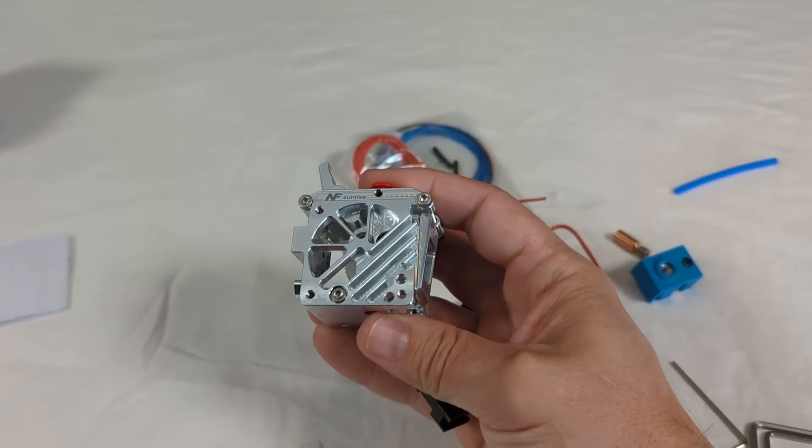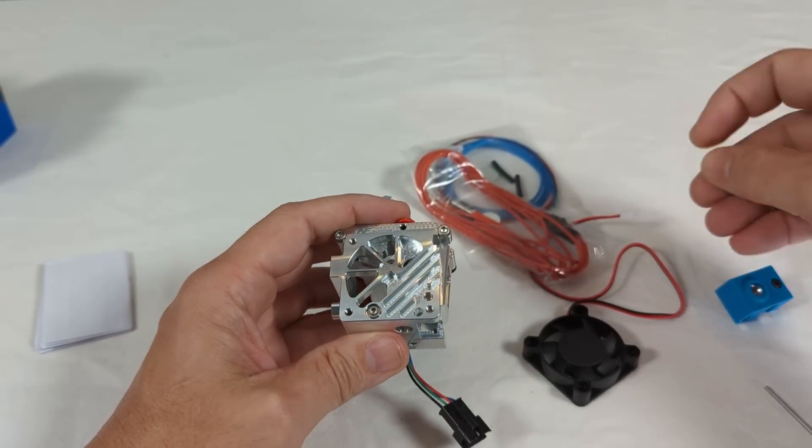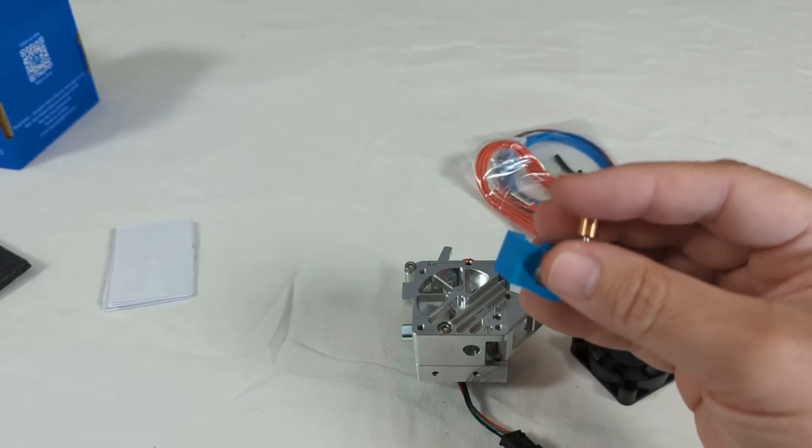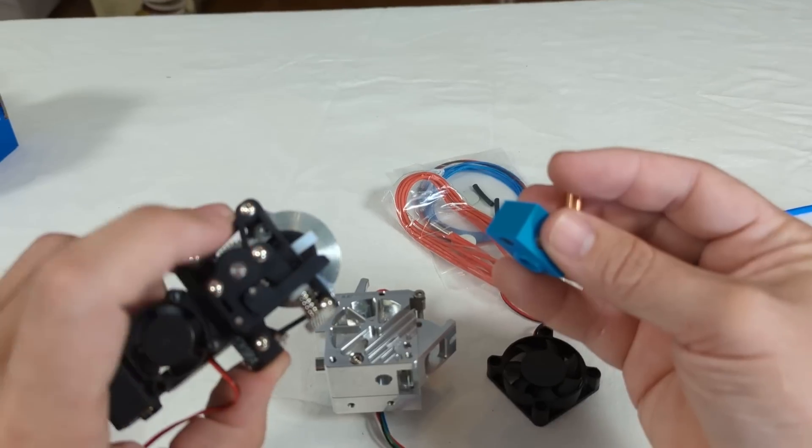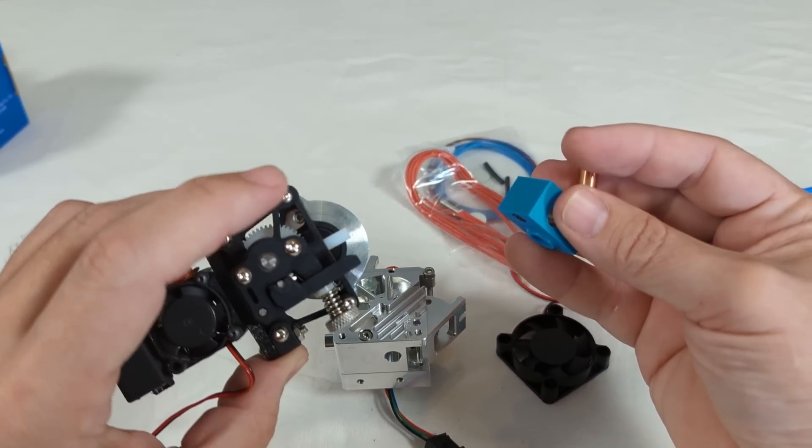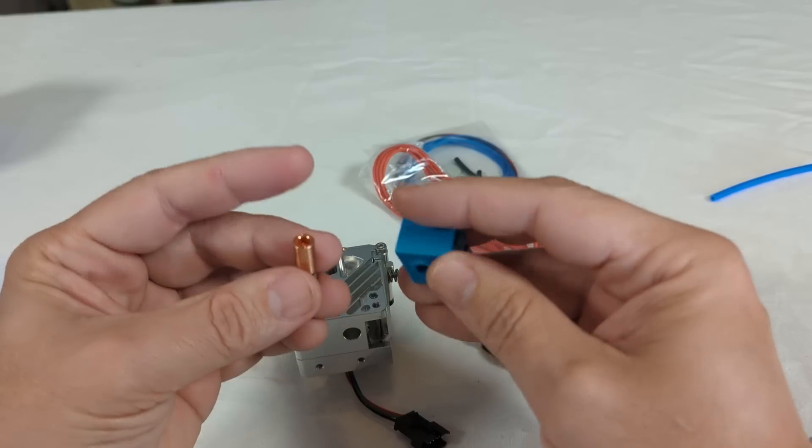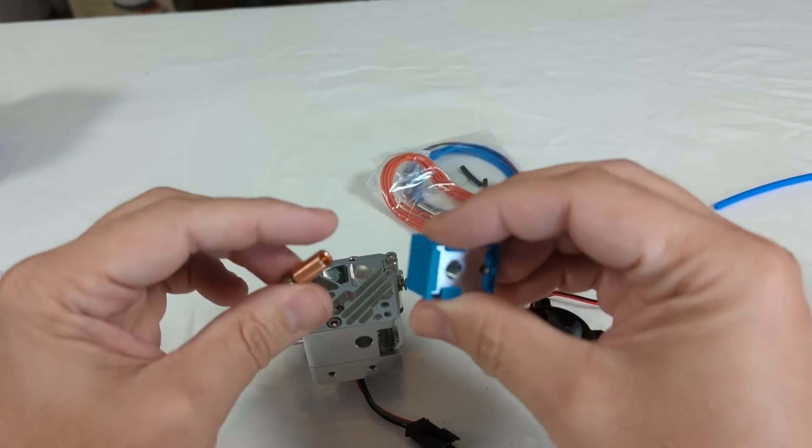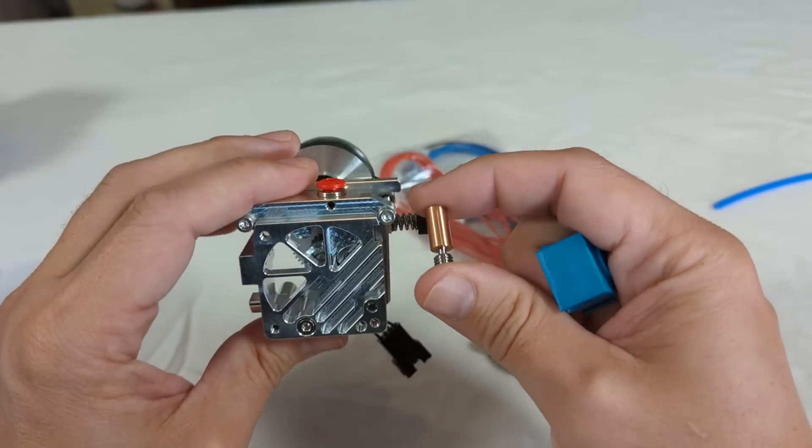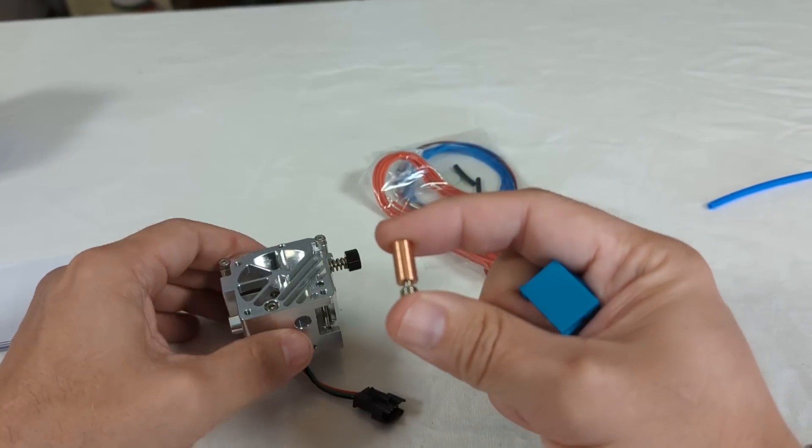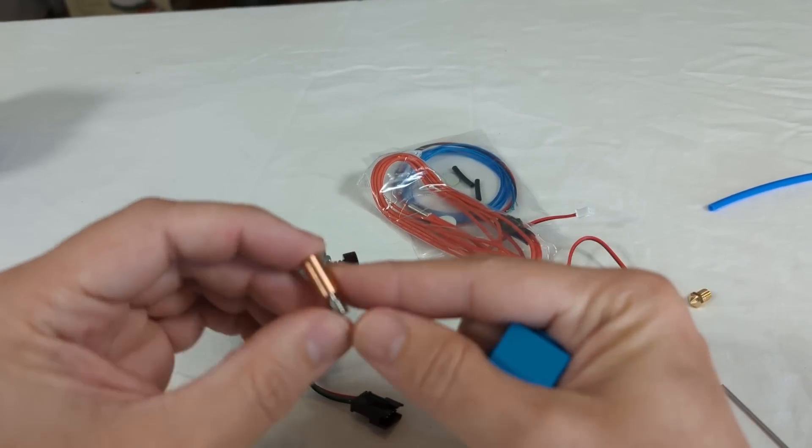But the NF Sunrise here comes with a dedicated solution in the box. That's in stark contrast to the Sherpa Mini which expects you to figure out how to mount something to it. And the whole filament melting hot end portion of this direct drive extruder is at least partially another knockoff.